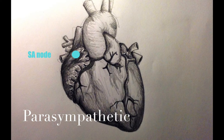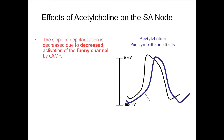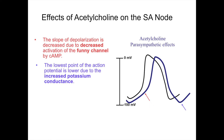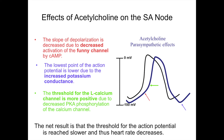Briefly, I'll discuss the parasympathetic stimulation of the heart. Activation of the muscarinic receptor in the pacemaker cells decreases the level of cAMP. The depolarization slope is less steep because the funny channels do not open as quickly, and therefore the heart rate decreases. The slope of depolarization is decreased and the lowest point of the action potential is lower due to increased potassium conductance. The threshold for the calcium channel is more positive due to decreased PKA phosphorylation of the calcium channel. Therefore, the threshold for the action potential is reached more slowly and the heart rate decreases.